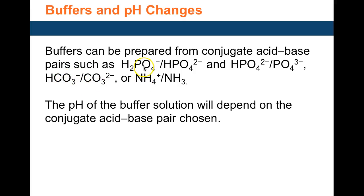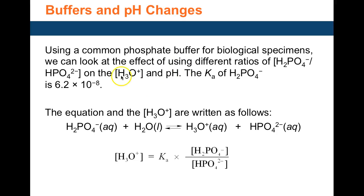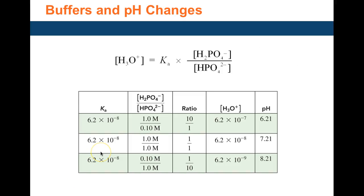The pH of a buffer depends on the acid and its conjugate base concentrations. The phosphate buffer is found in plasma and the bicarbonate buffer is found in blood. For the phosphate buffer: H2PO4⁻ (dihydrogen phosphate) and HPO4²⁻ (hydrogen phosphate). The Ka value of H2PO4⁻ is 6.2×10⁻⁸. We plug into H3O+ = Ka × [acid] / [conjugate base].